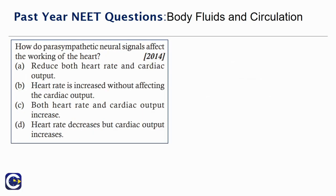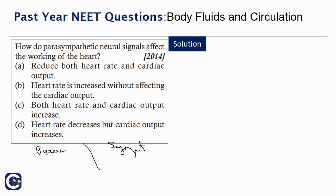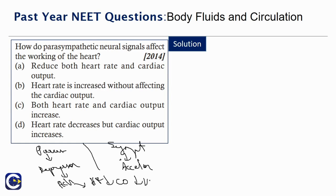How do parasympathetic neural signals affect the working of the heart? Parasympathetic acts through the depressor center in the medulla oblongata, and sympathetic acts through the accelerator center. The depressor center releases acetylcholine (ACH), which decreases the heart rate, cardiac output, and venous return. Sympathetic generally increases the heart rate, cardiac output, and venous return. So parasympathetic generally reduces both heart rate and cardiac output.